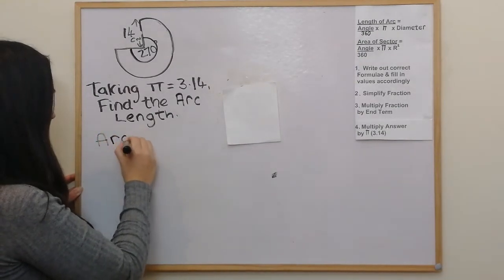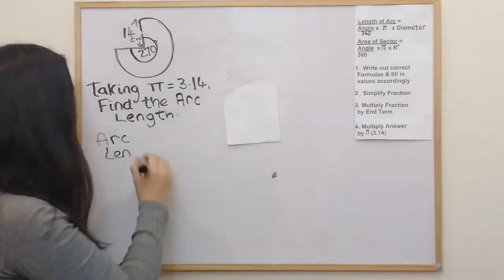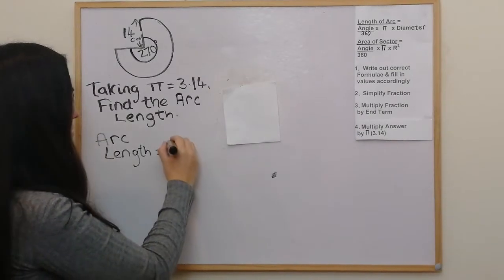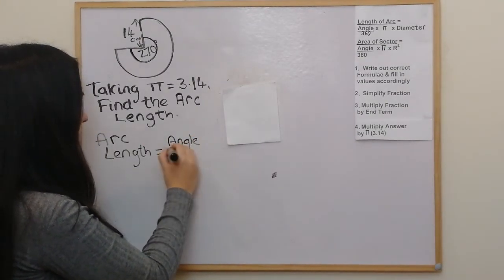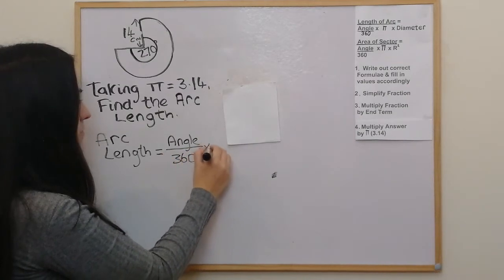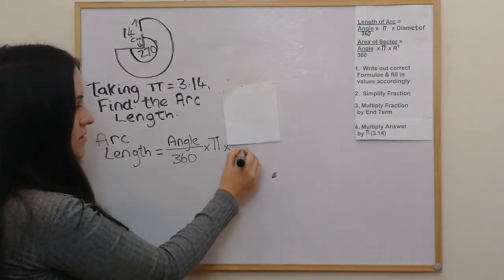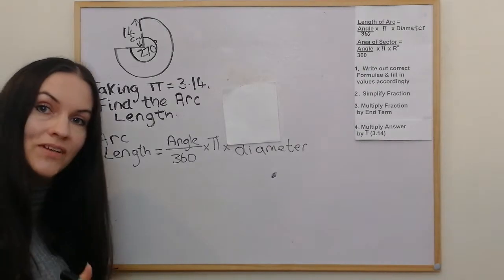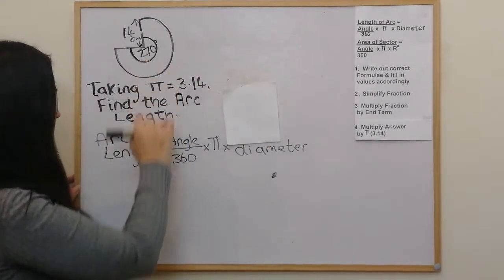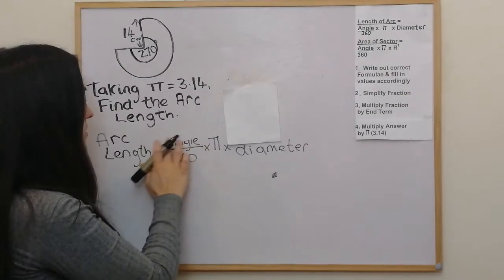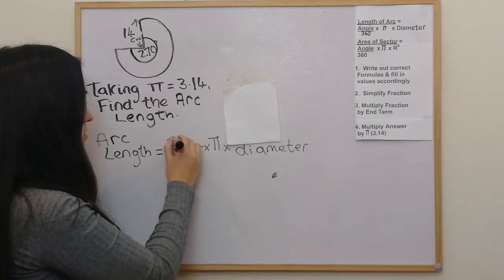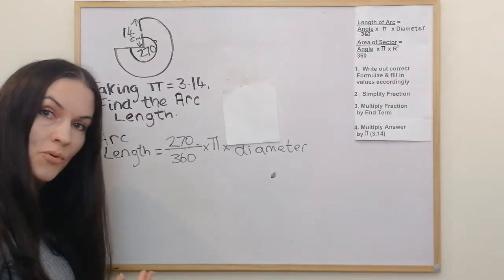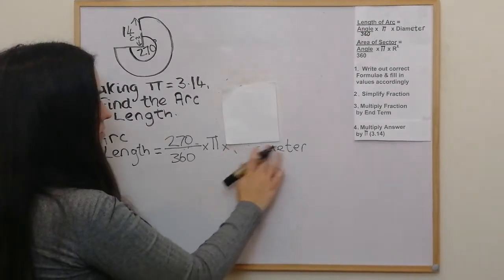The formula for arc length is: angle over 360 times pi times the diameter. We fill in the values: the angle is 270. For the diameter — if the radius is 14, the diameter is double that, so it's 28.